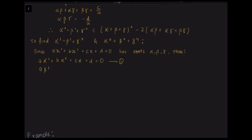Next, a·β³ + b·β² + c·β + d = 0, and this is equation 2. Substituting γ, we have a·γ³ + b·γ² + c·γ + d = 0, and this is equation 3.